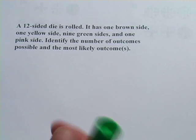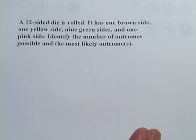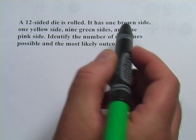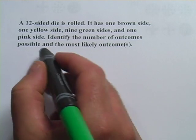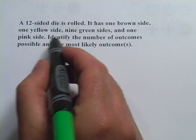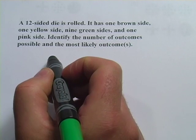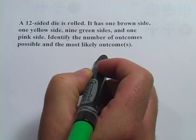This next one's a little more complicated. It says that a 12-sided die is rolled. It has one brown side, one yellow side, nine green sides, and one pink side. And they want us to identify the number of outcomes possible and the most likely outcomes.